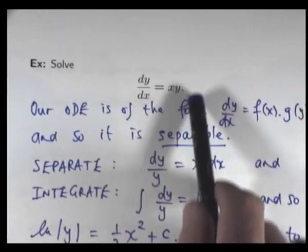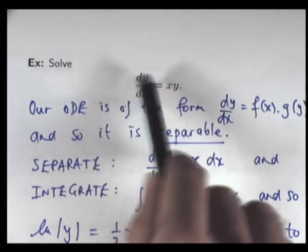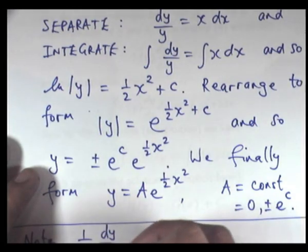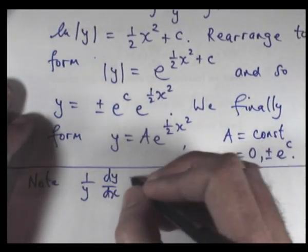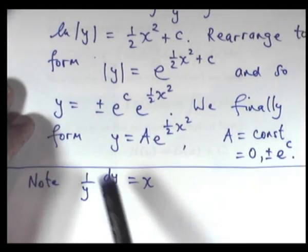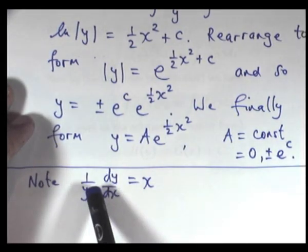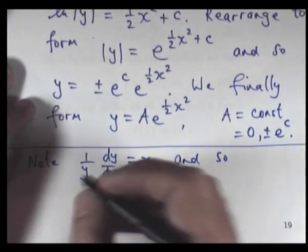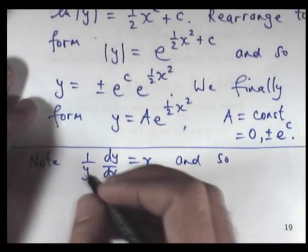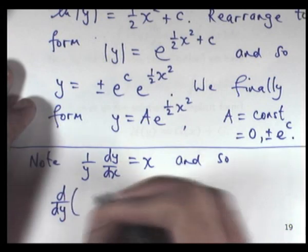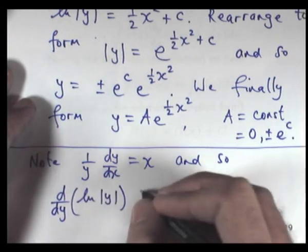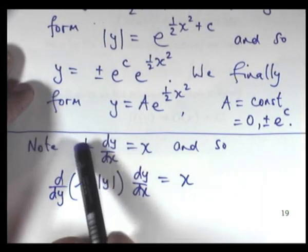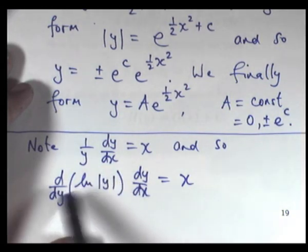Alright, so, I'm going to bring the y down here to form one over y dy/dx equals x. Now, one over y is just the derivative of log y. So, I've just replaced this with d of log y dy.